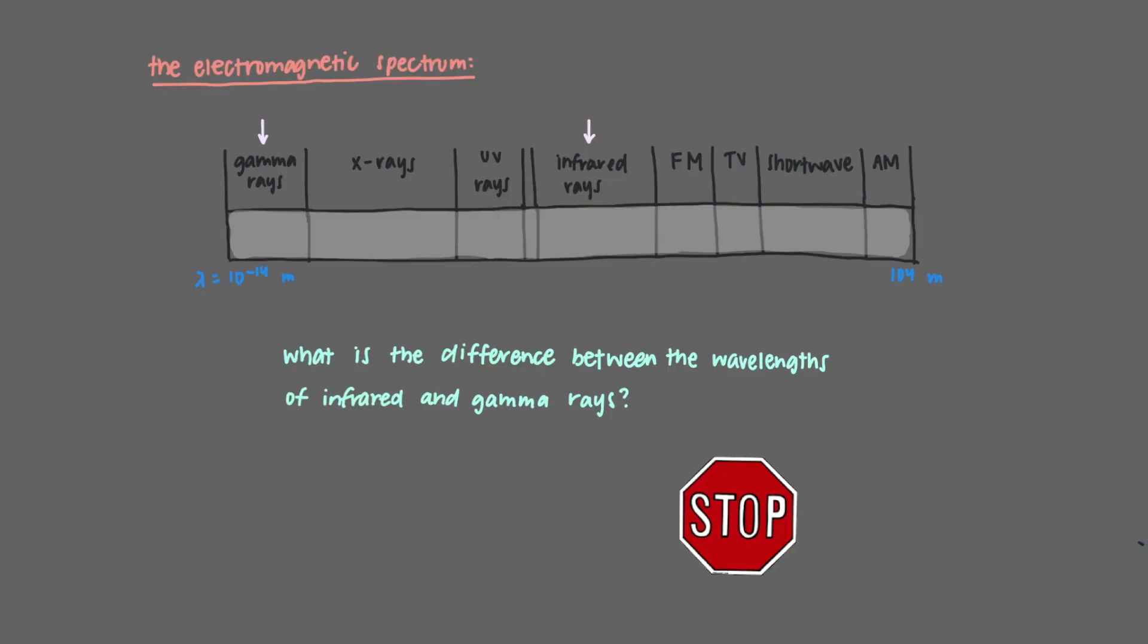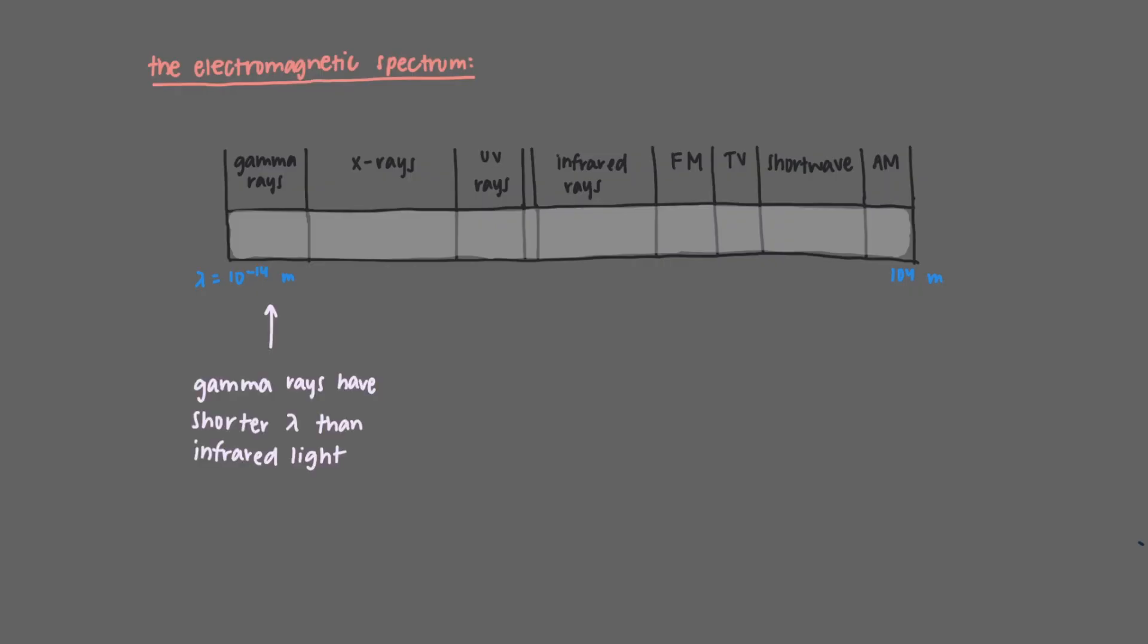What is the difference between the wavelengths of infrared and gamma rays? What is the difference between the frequencies of infrared and gamma rays? By looking at the electromagnetic spectrum, we can see that gamma rays have a shorter wavelength than infrared light. This also means that gamma rays have a higher frequency than infrared light. This makes sense because we know that wavelength and frequency are inversely related.